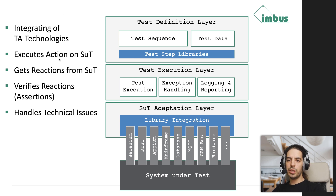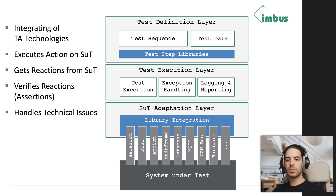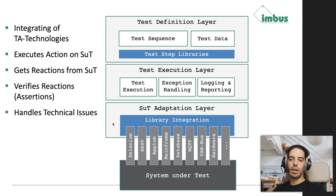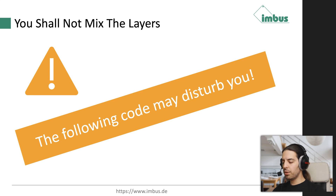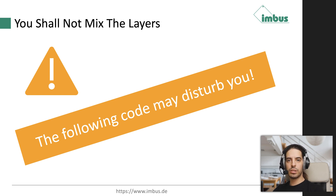In the system under test adaptation layer, we execute the real actions on our system under test, get the reactions from it, control the points of control and observation, and verify reactions by doing assertions. This is the correct layer where we handle technical issues like starting a database — this should not be done in the test definition layer. I strongly recommend not mixing these layers.